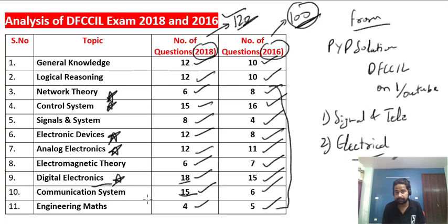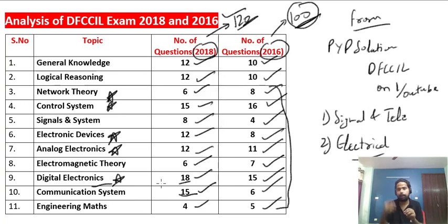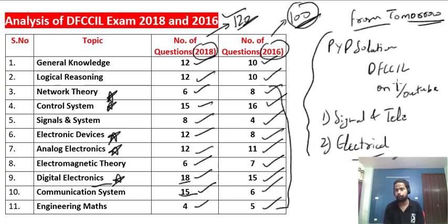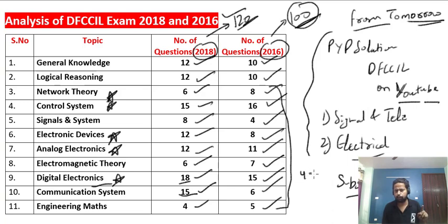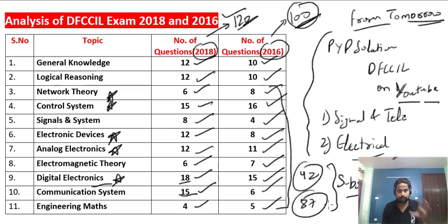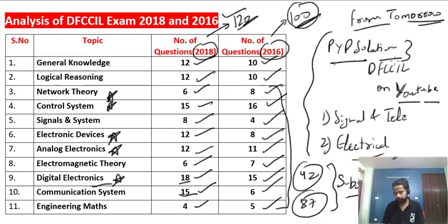These are the subjects you must prepare for the DFCCIL exam. If you have any doubts about this analysis, you can ask me. Detailed syllabus with each topic will be provided in PDF format in the coming week. From tomorrow, previous year paper solutions for DFCCIL will be available on this YouTube channel — Techno Wizard — so please subscribe, like, and share with friends preparing for DFCCIL. There are around 42 vacancies for Electrical and 87 vacancies for Signal and Telecommunication post. Prepare well and all the very best!